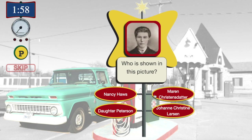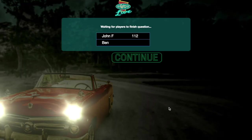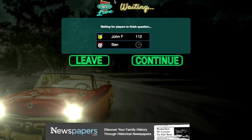The game will automatically generate a question based on the family tree of the central person. Each person in the game will have two minutes to correctly answer the question. The faster you answer the question, the more points you receive.